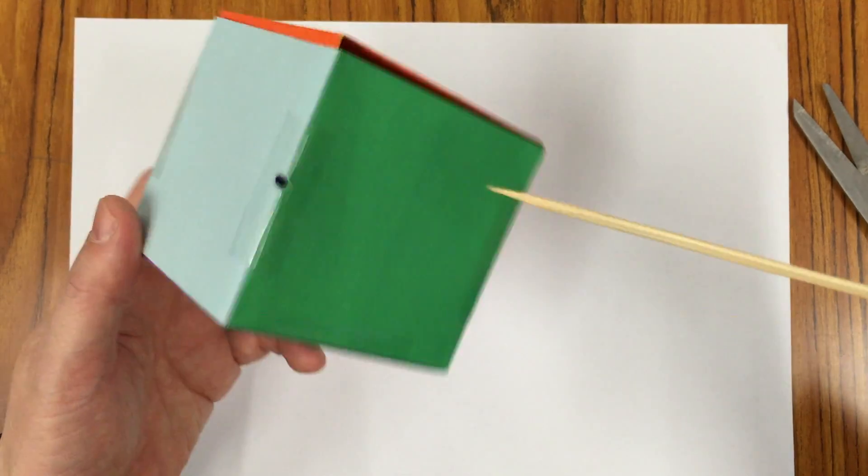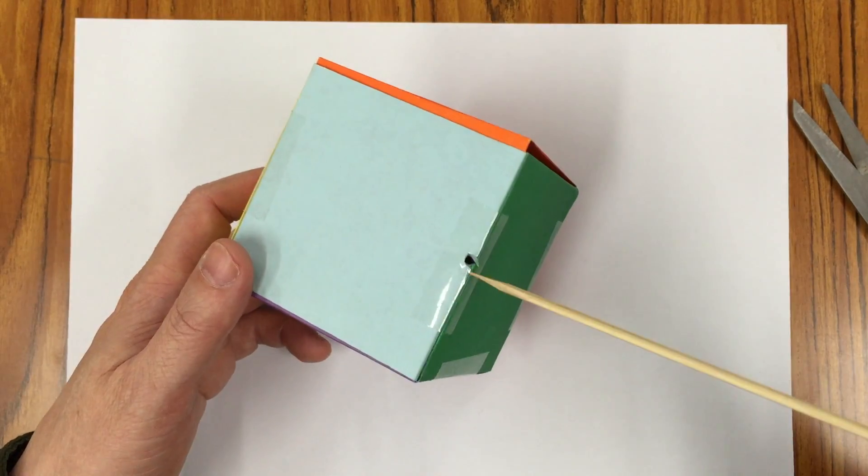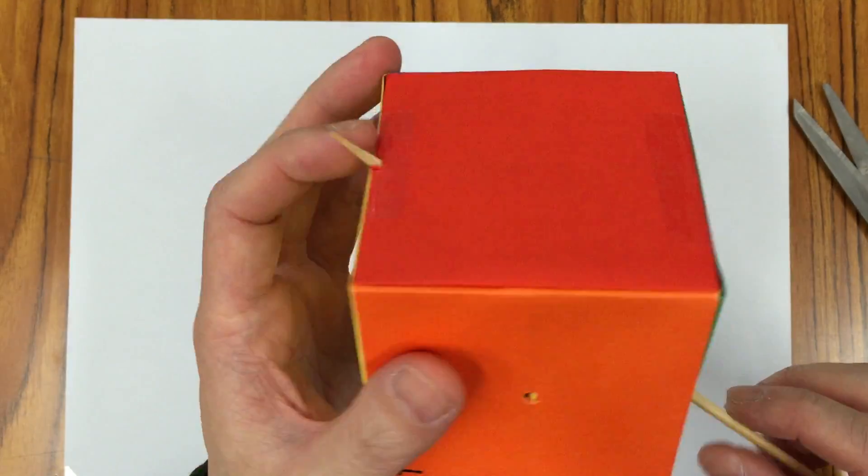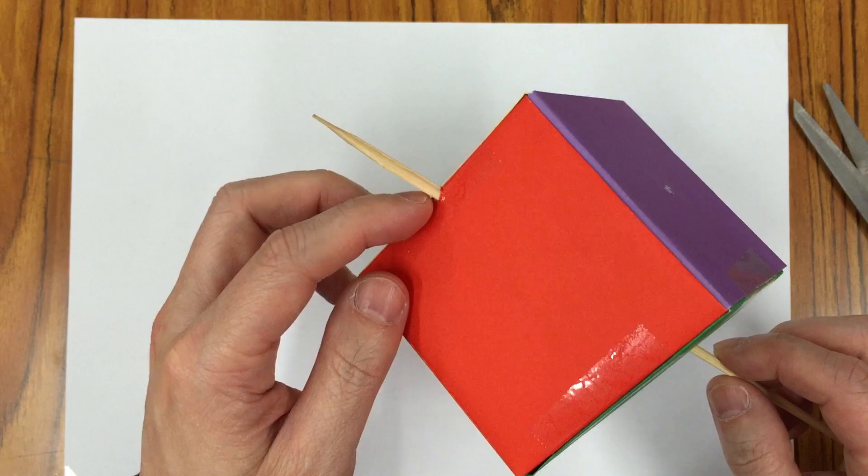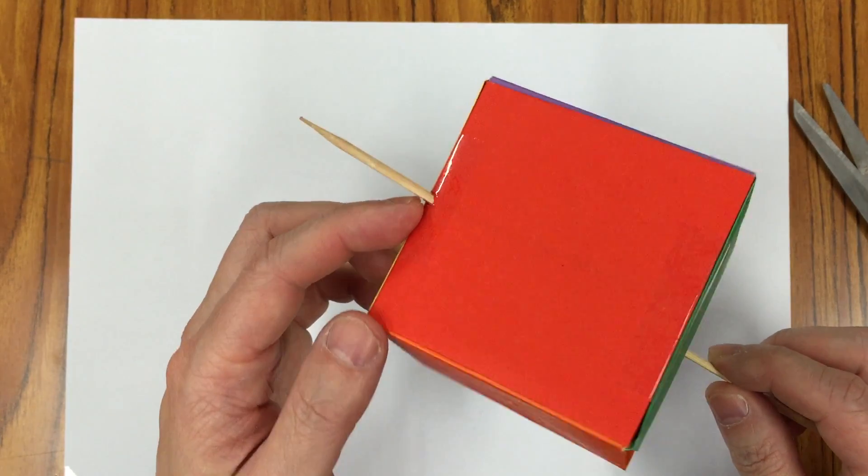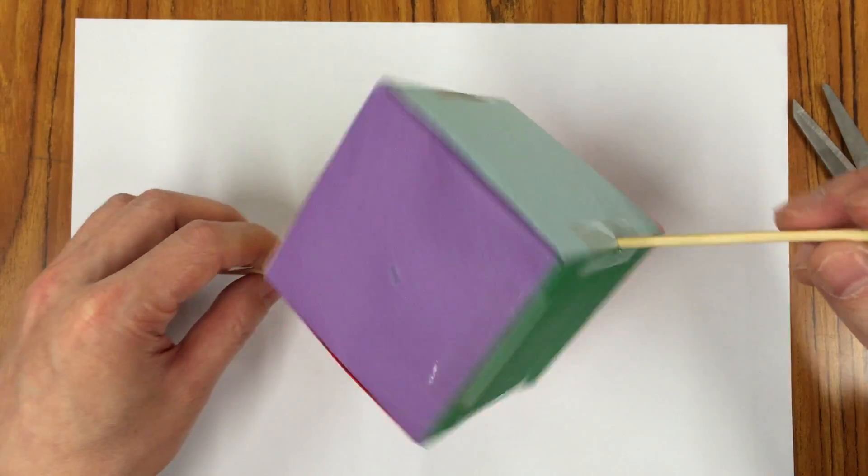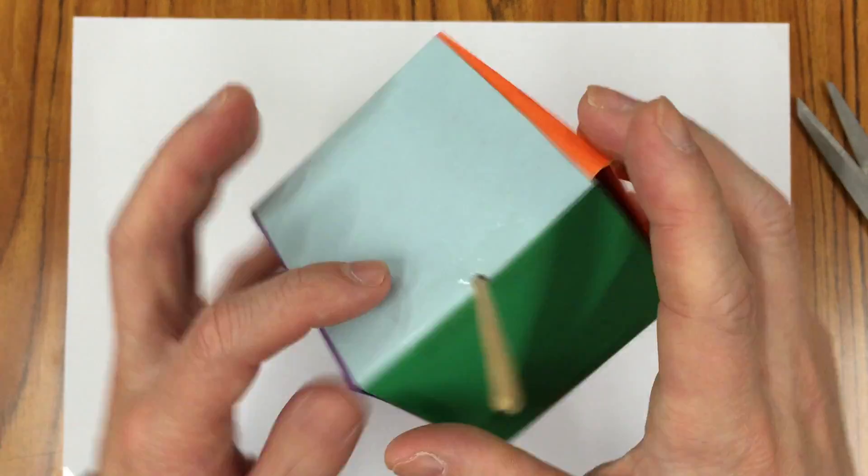But what about the side? Can we put a stick through one of the sides and then go through the cube, getting out again from the midpoint of the other side? So will this be another form of rotational symmetry? And the answer is yes.